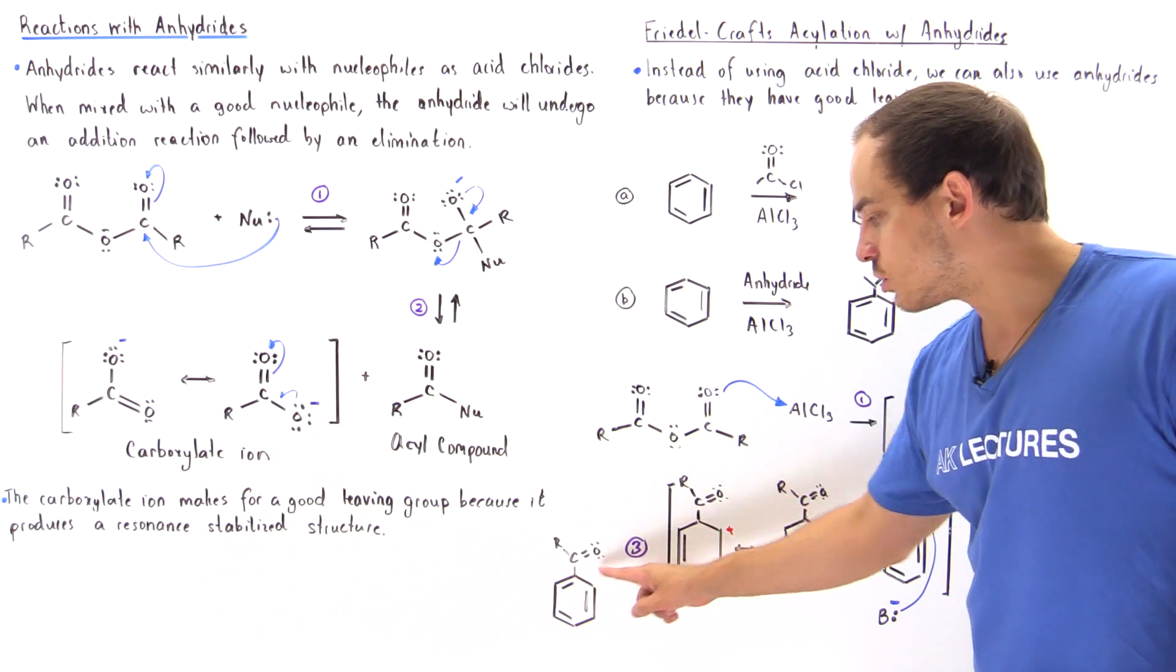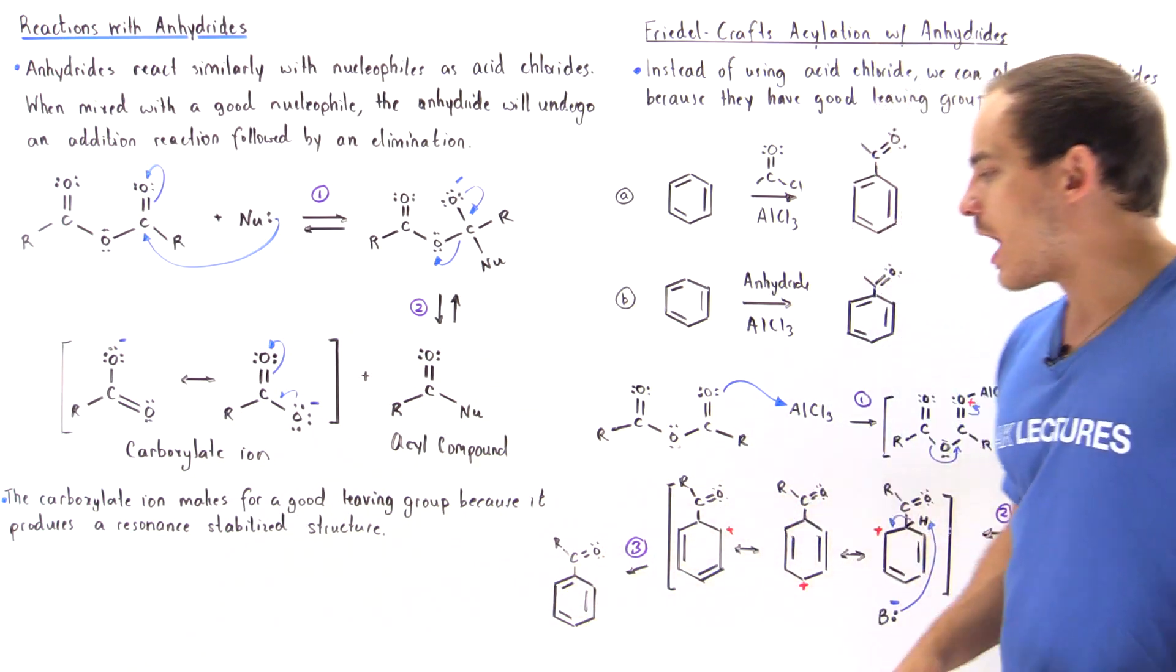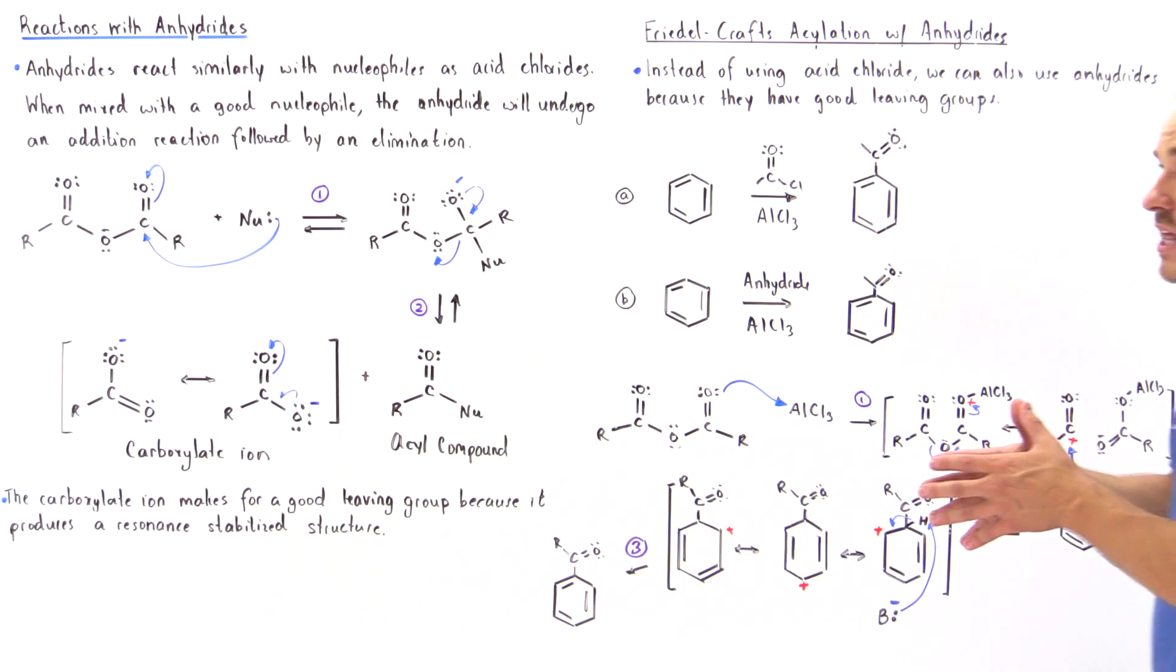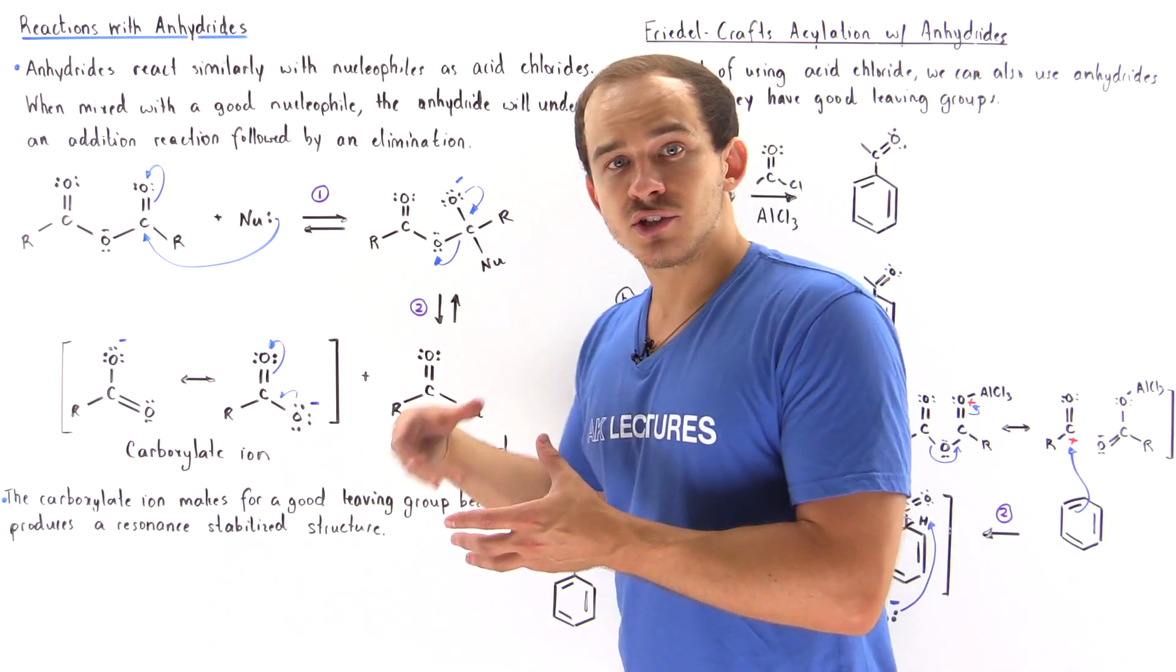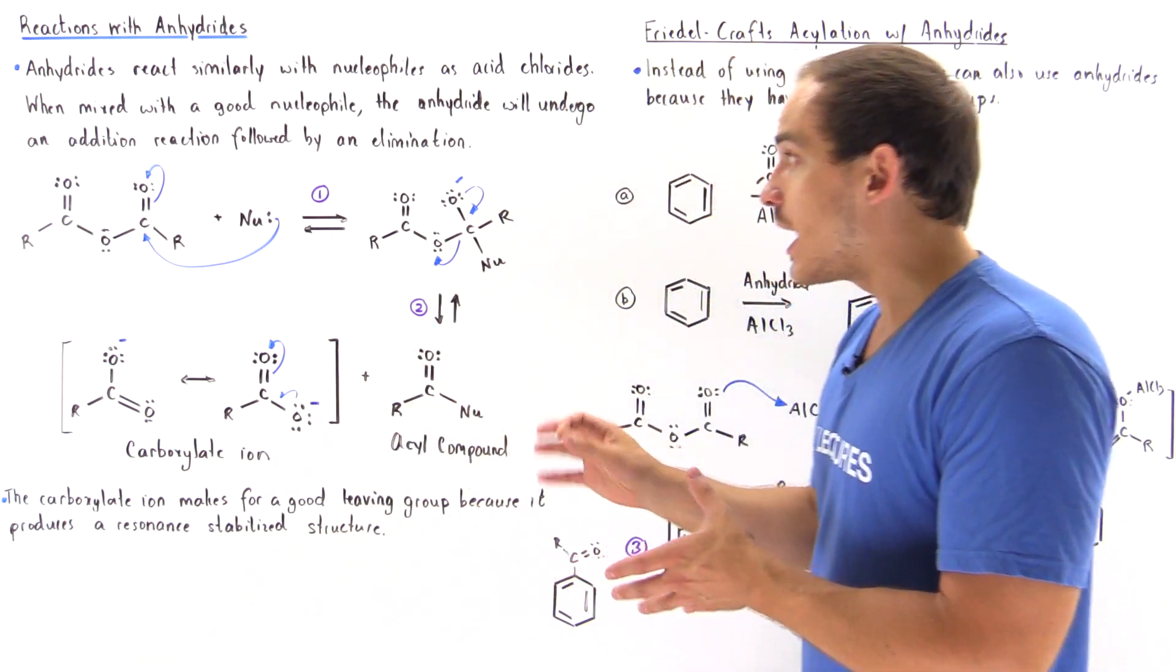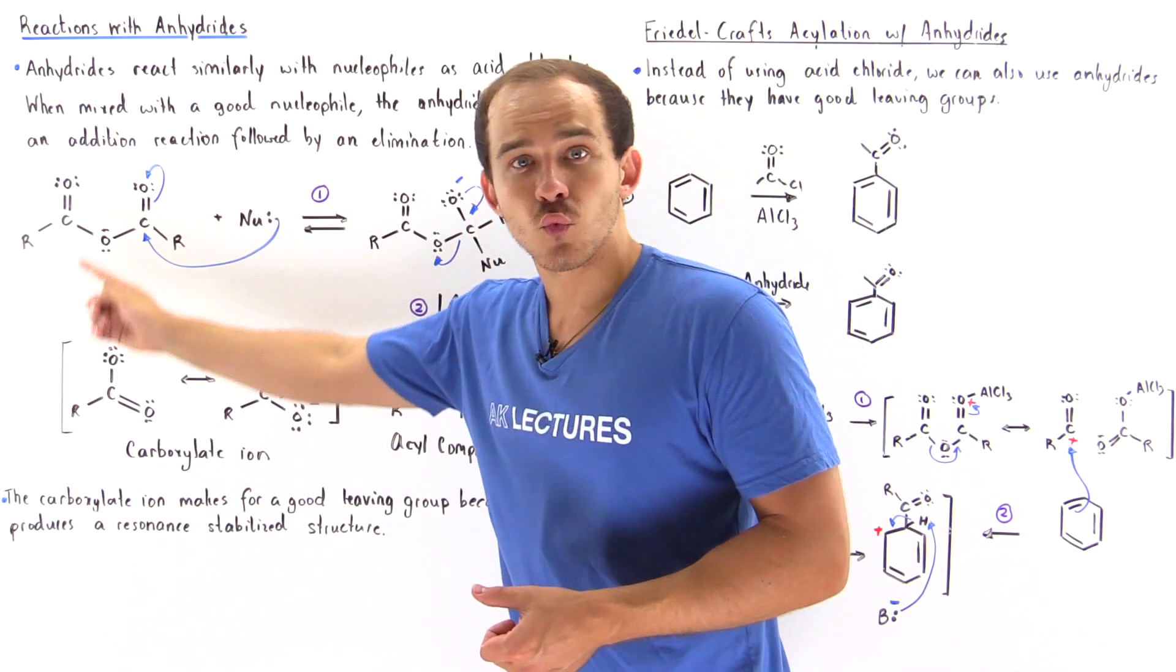So we have this acyl group that is attached to our benzene ring. So we see that because acid chlorides and anhydrides behave in such similar ways,